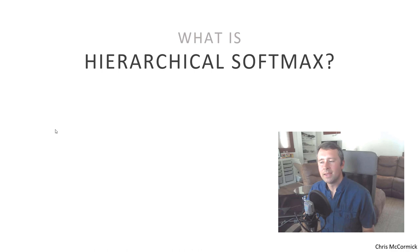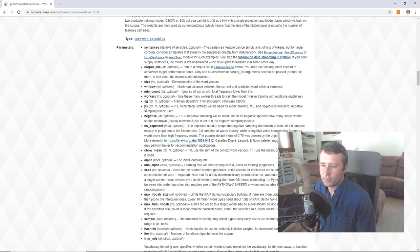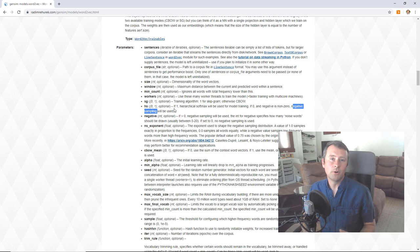But maybe the case that you've encountered it in is in training a Word2Vec model. So if you use a library like Gensim, then maybe you've seen one of the parameters nestled in here with all the others, is that you've got to choose between either using hierarchical softmax or negative sampling.